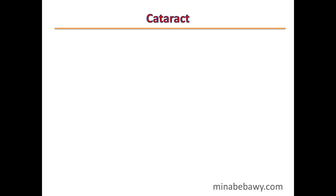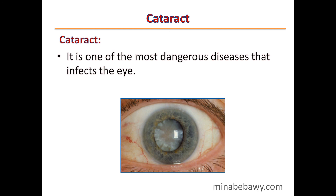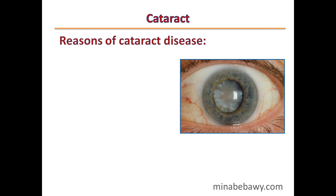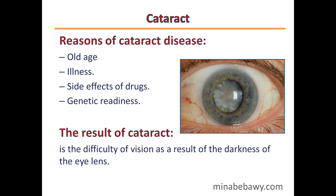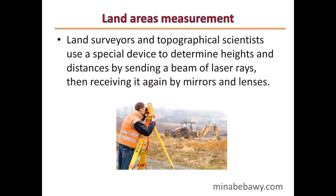The final vision defect is cataract, one of the most dangerous diseases affecting the eye. Causes include old age, illness, side effects of drugs, and genetic disorders. The result is difficulty of vision due to darkening of the eye lens. Cataract is treated through surgery by replacing the eye lens with a convex plastic lens. Additionally, land surveyors use special devices to determine heights and distances by sending laser beams and receiving them back via mirrors and lenses.